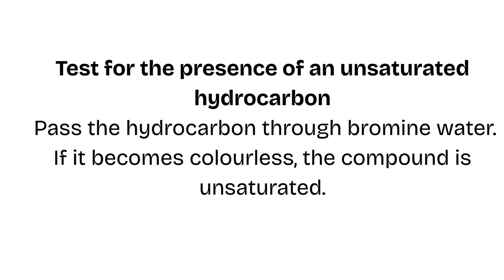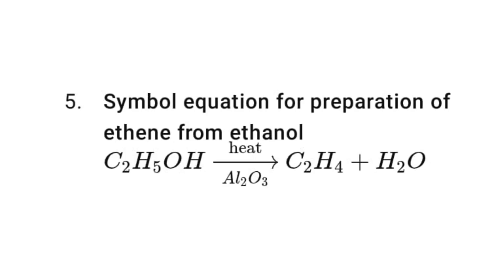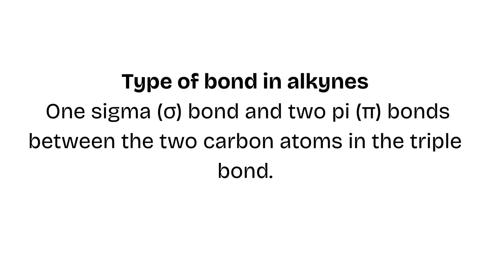Symbol equation for preparation of ethene from ethanol. Type of bond in alkynes: one sigma bond and two pi bonds between the two carbon atoms in the triple bond.